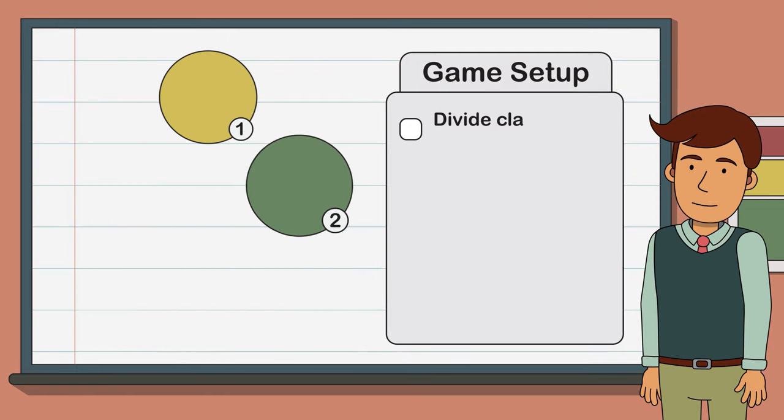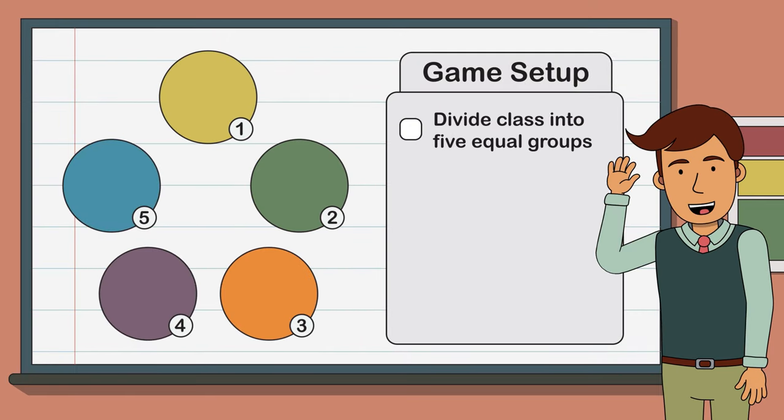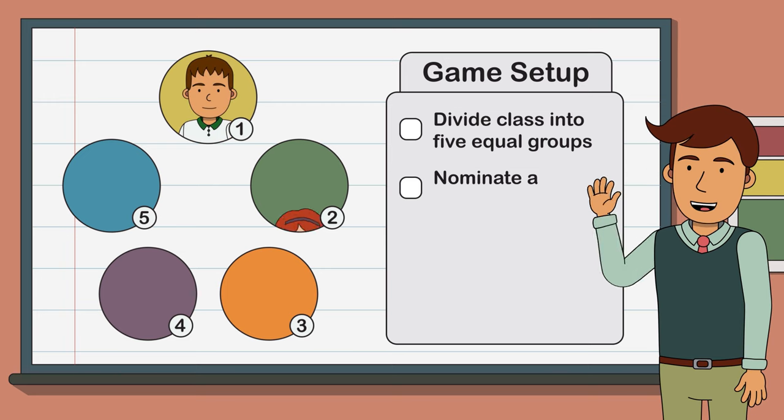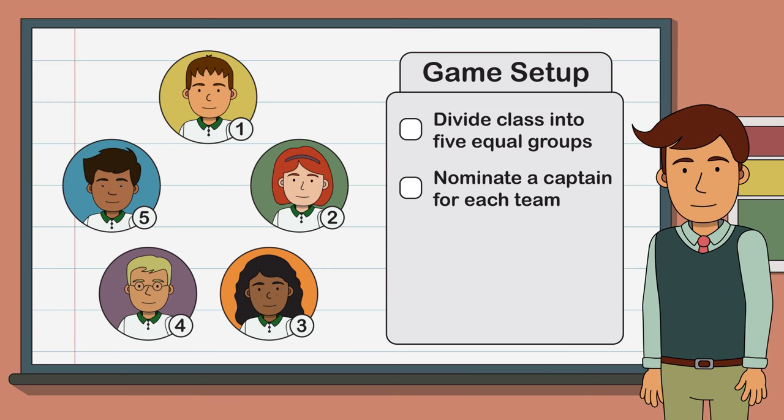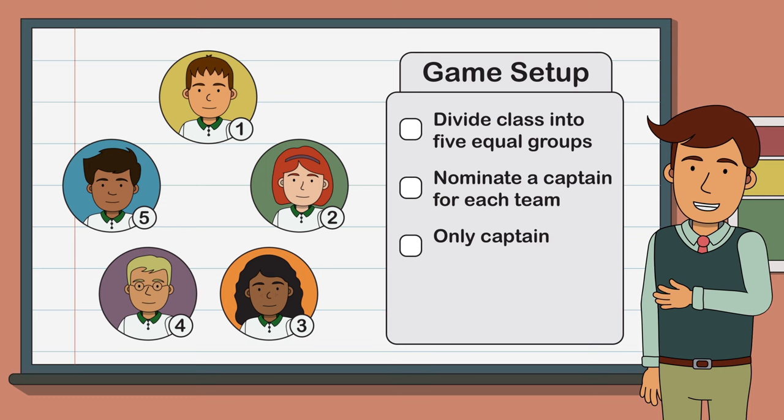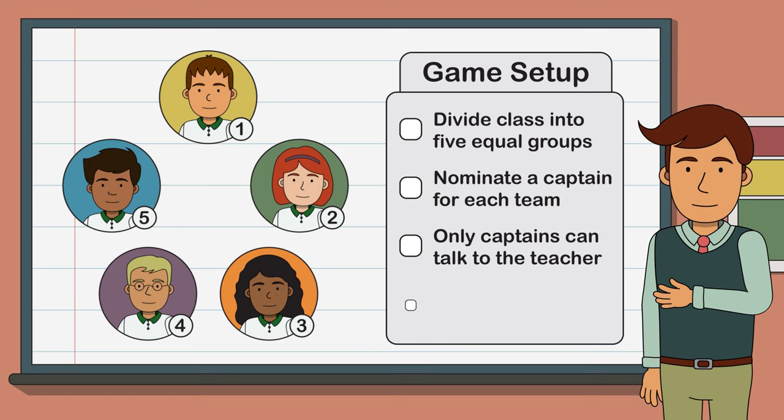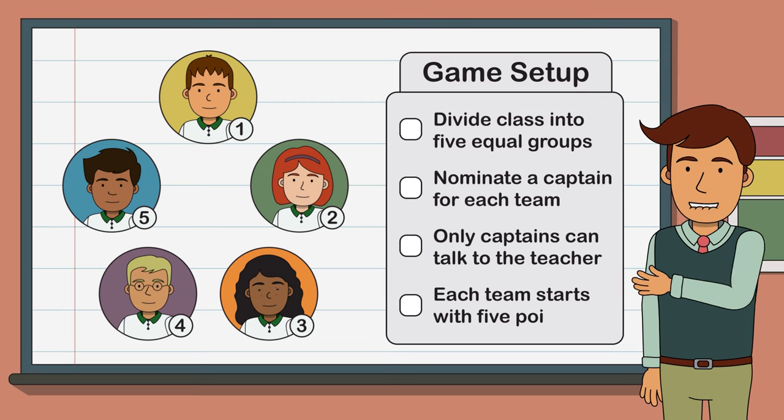Firstly, divide the class into five roughly equal groups and nominate one person in each group to be a captain. These five captains are the only people allowed to communicate with the teacher on behalf of their group. Each team starts with five points.